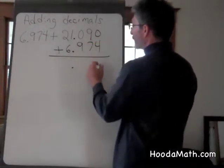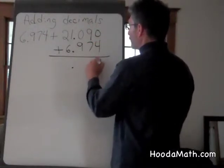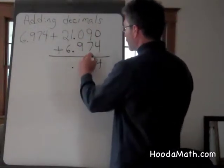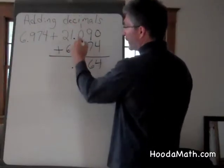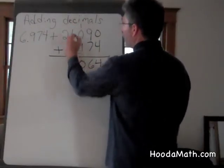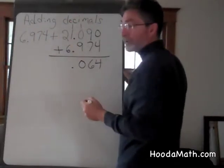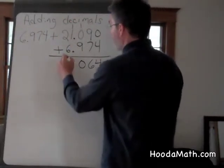Four plus zero is four. Nine plus seven is sixteen. Regroup. One and nine is ten. Regroup again. One plus one plus six is eight.